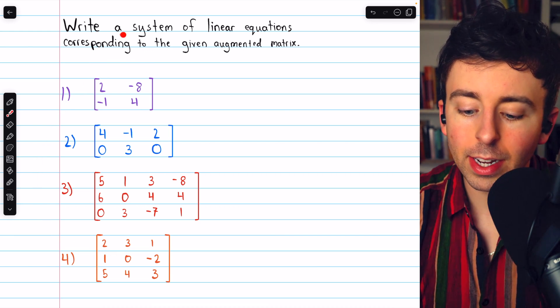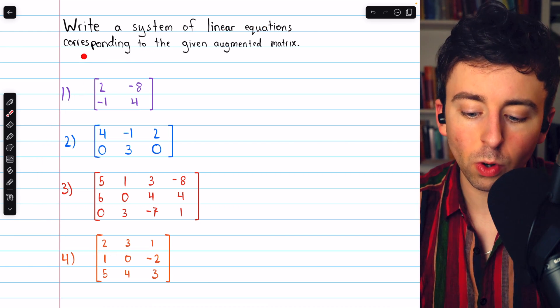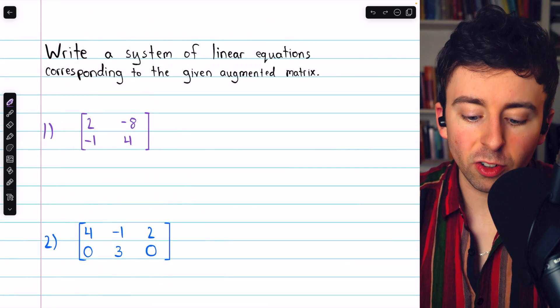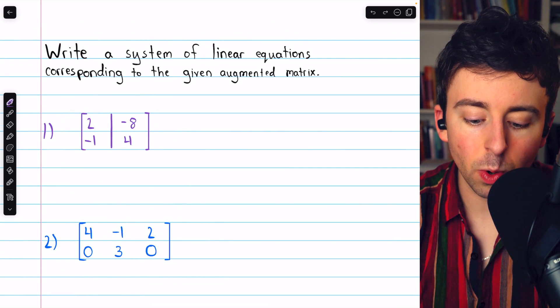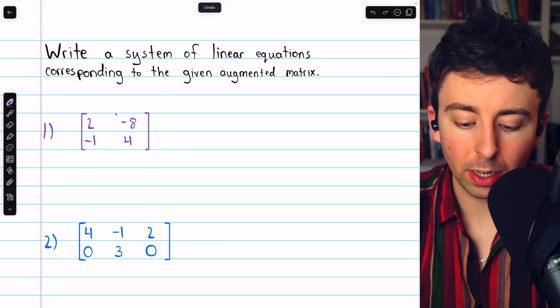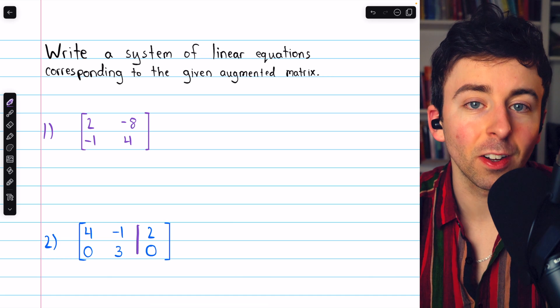Let's do these four examples of writing a system of linear equations corresponding to the given augmented matrix. Note that in each example, the vertical line that you often see in augmented matrices has not been written, but if it helps you, you can just picture it before the last column.